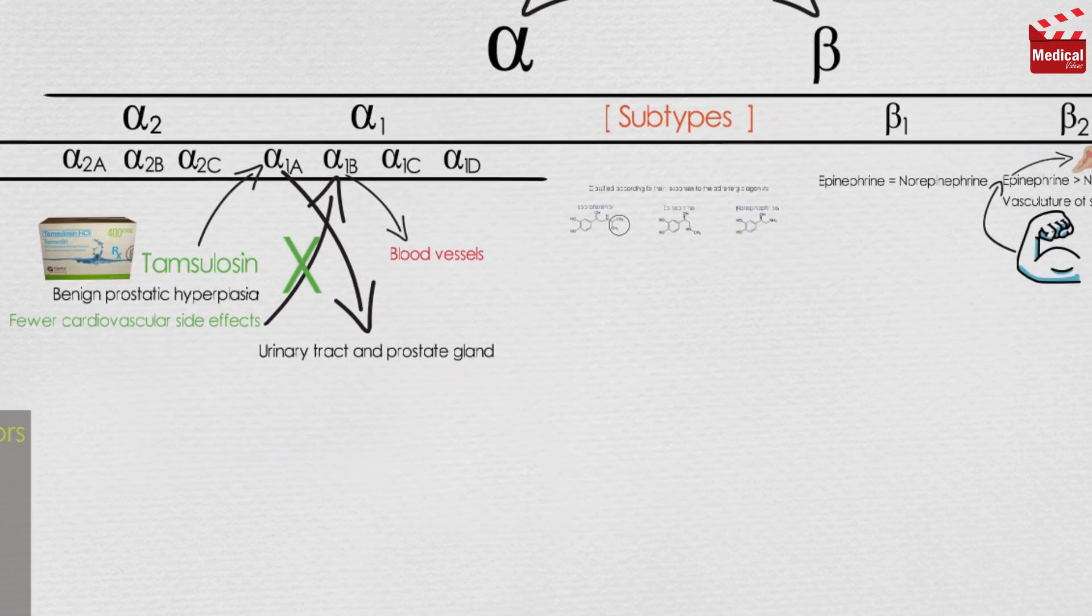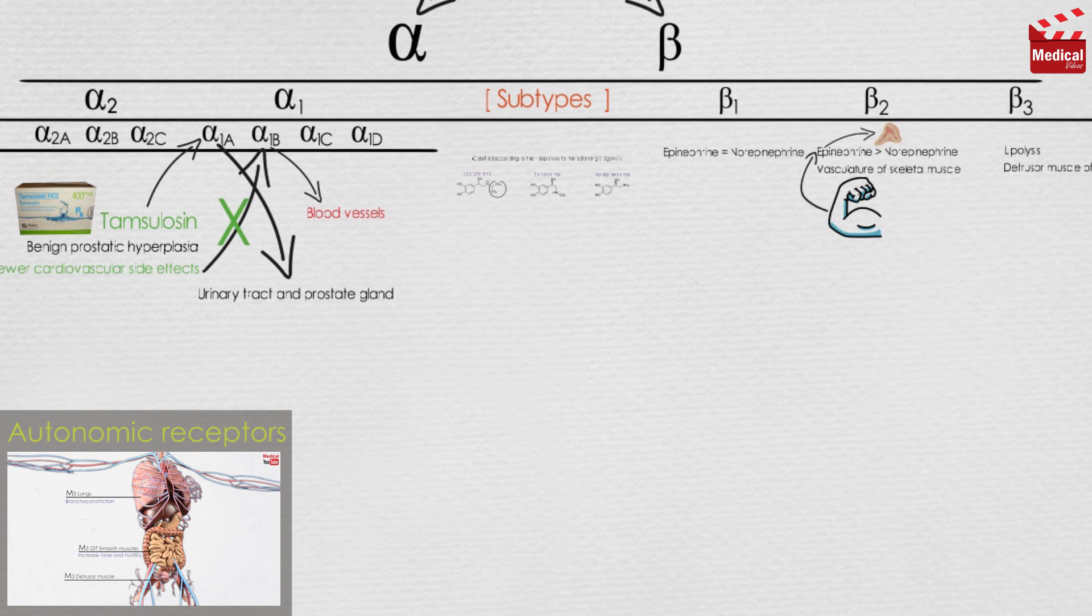We've already discussed the autonomic receptors' distribution and effects in details in a previous lecture, but let's summarize it again in a minute.